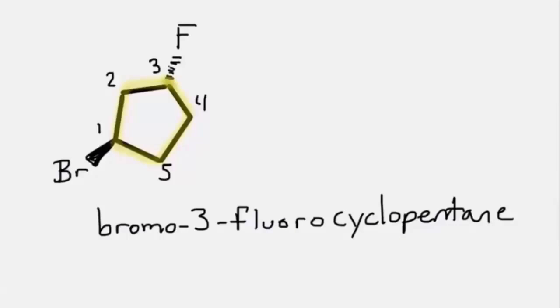However, we're not done here because in cyclic alkanes with two substituents, cis-trans isomerization can happen. So in looking at the dash wedge designation, we see that the bromine is protruding out from the page. The fluorine is protruding into the page. These two substituents are on opposite sides of the plane of the ring. This would be designated as trans. So we have trans-bromo-3-fluoro-cyclopentane.